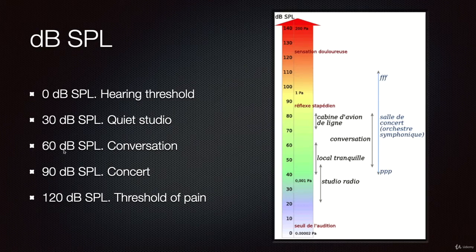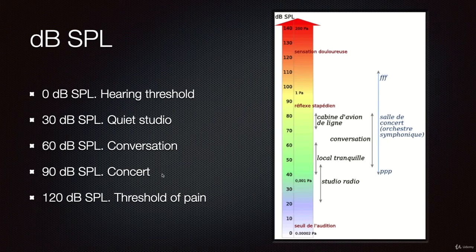Then 60 dB would be, you know, a common conversation when you are speaking with someone—probably the average sound pressure level would be around 60-70 dB SPL. Now if you go to a concert, probably the average level would be around 90-100 dB SPL.